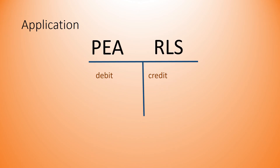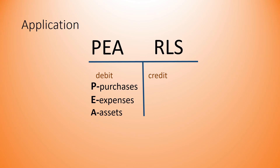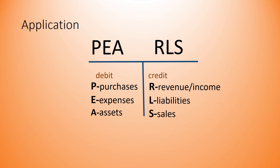Here's a list of the types of accounts that go on the debit side: purchases, expenses, and assets. And on the credit side, we have revenue or income, liabilities, and sales.